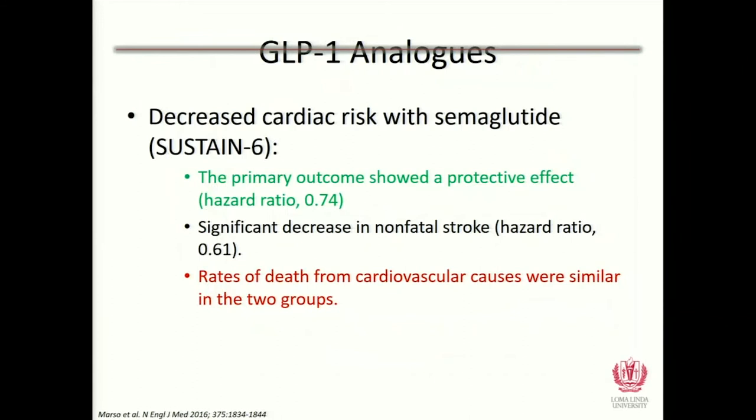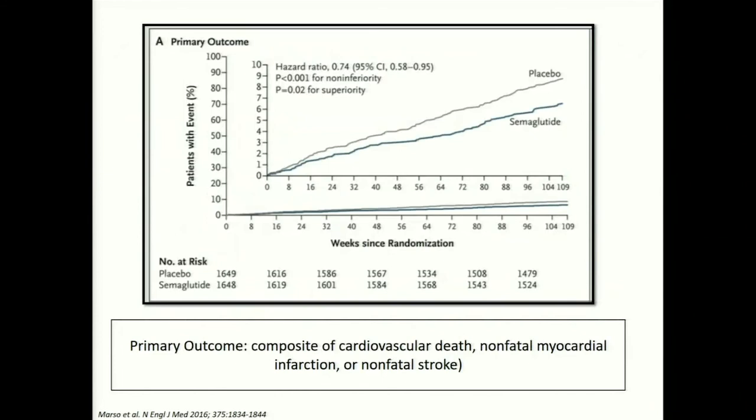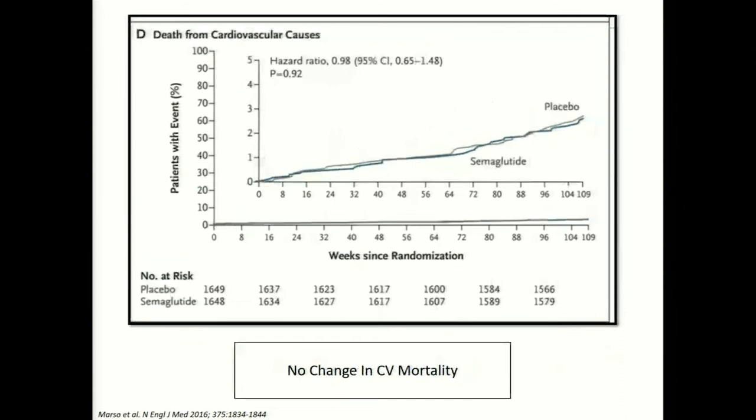Semaglutide's primary outcome showed a protective cardiovascular effect, though rates of death from cardiovascular causes were similar — they showed decreased risk of developing cardiovascular outcomes but didn't demonstrate a significant reduction in cardiovascular mortality. The oral semaglutide data showed some similar effects, although it didn't demonstrate complete superiority over the subcutaneous version.